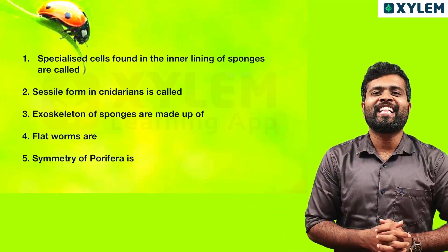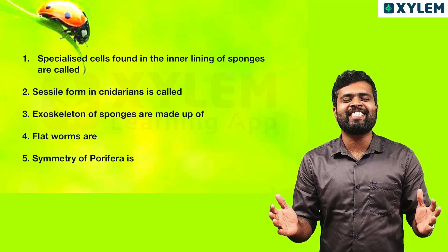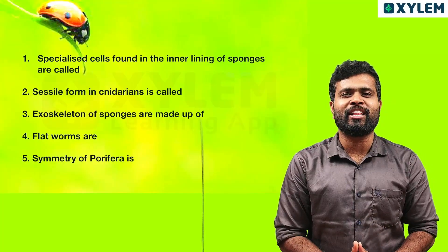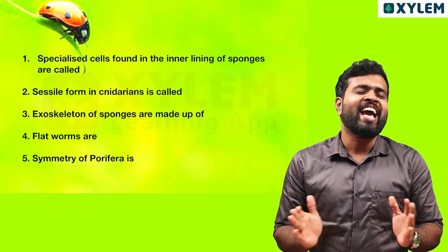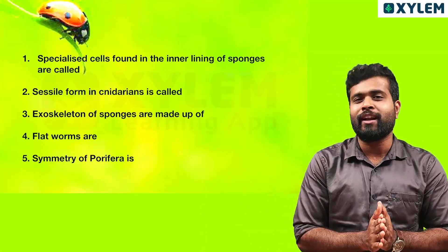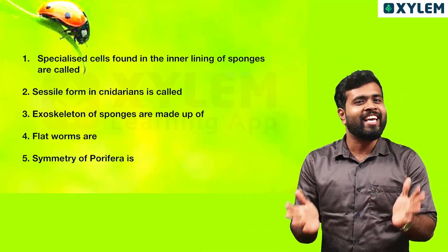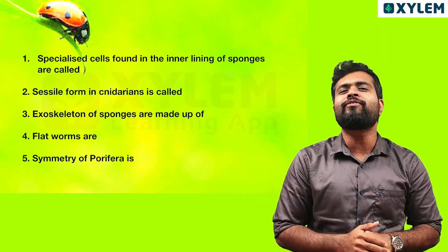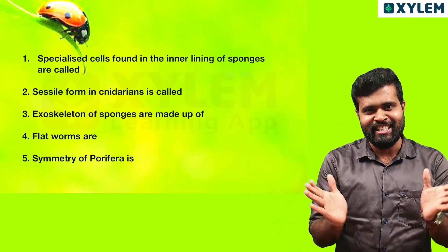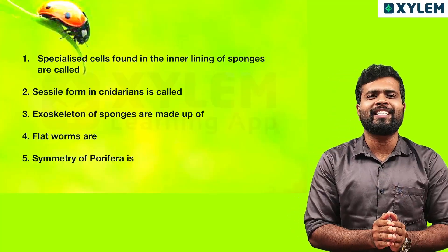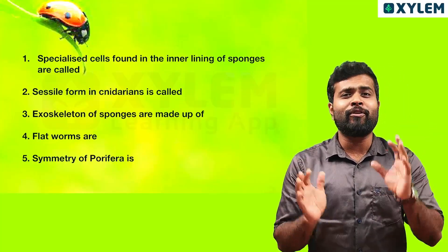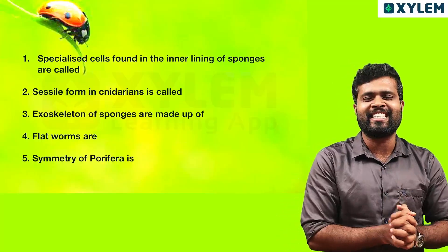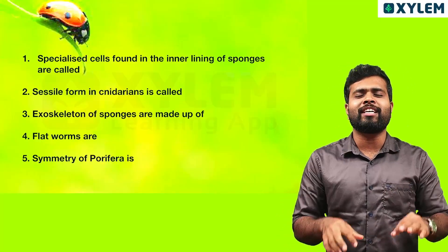Hello friends! In our first class, the first class of Animal Kingdom, this is a live class. We are studying four phyla: Porifera, Cnidarians, Ctenophora, and Platyhelminthes. That's all in the background, and we are going to discuss some of the previous questions in this live video.